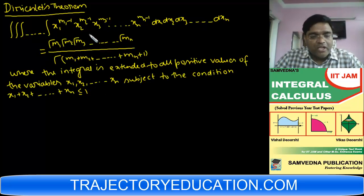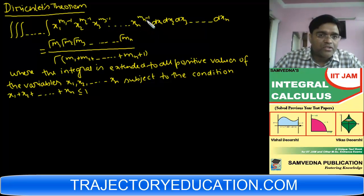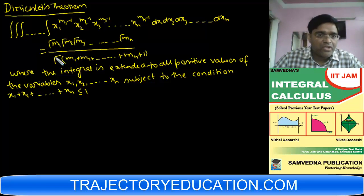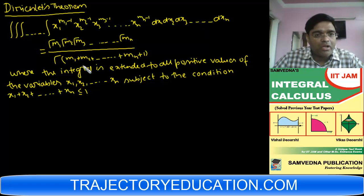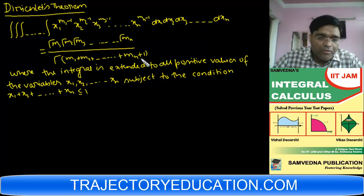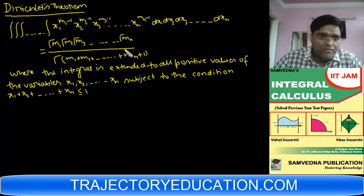The integral of x1^(m1-1), x2^(m2-1), x3^(m3-1) ... xn^(mn-1) dx1 dx2 dx3 ... dxn is equal to [Γ(m1) · Γ(m2) · Γ(m3) · ... · Γ(mn)] / Γ(m1 + m2 + m3 + ... + mn + 1). This is very important — people forget the '+1'. Remember, it is mn plus 1.